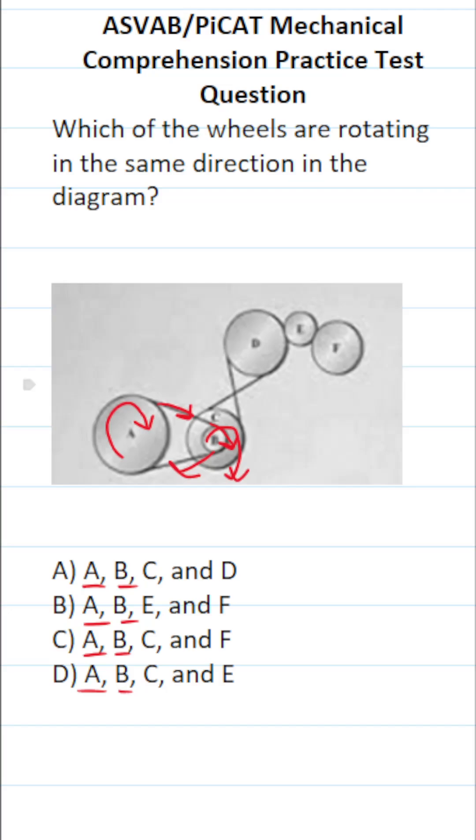Now B sits on top of wheel C. So wheel C is also going to turn in the same direction as wheel A and B. So right away, we know this one is not correct because it does not include wheel C.